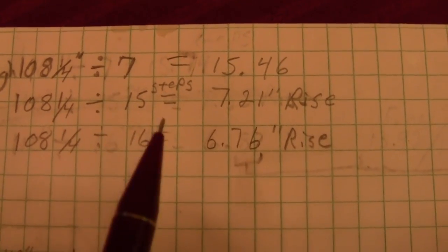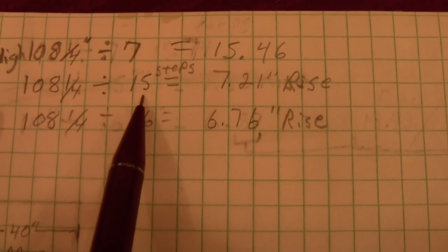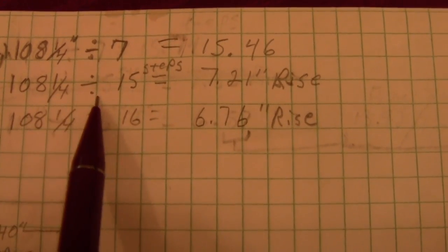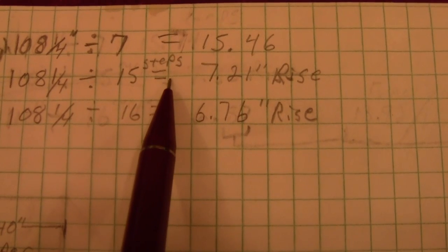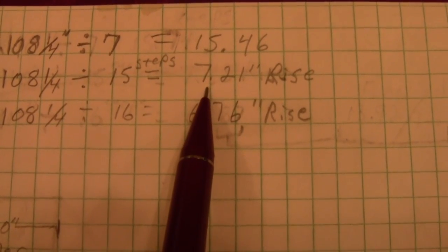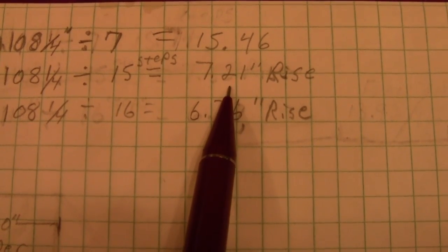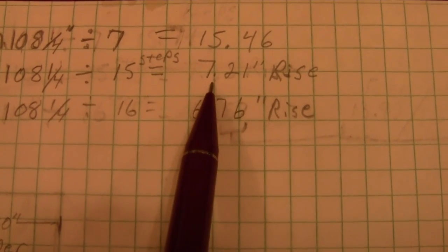Well, I'm going to take 15 now and divide 108 and a quarter by 15 steps. And it turns out to be about 7 and a quarter rises. So, that's fine. That's within code.